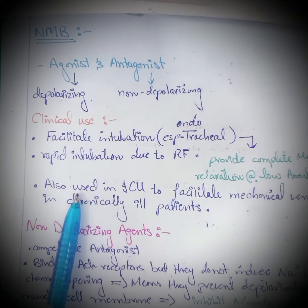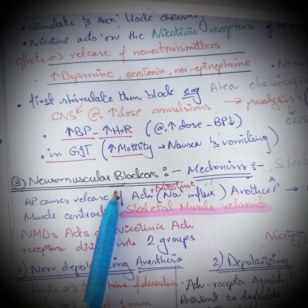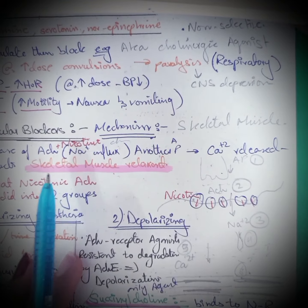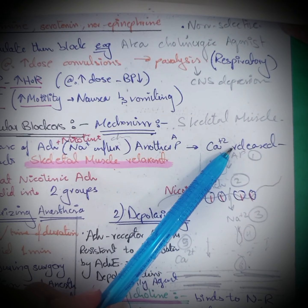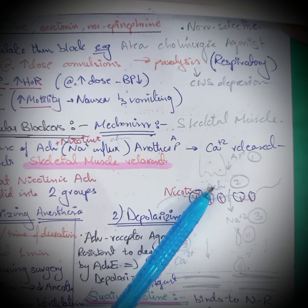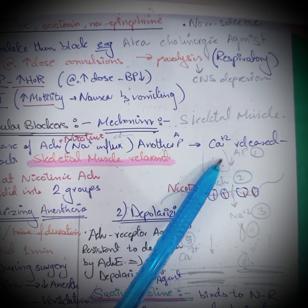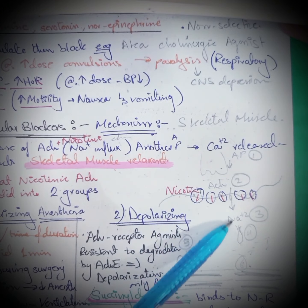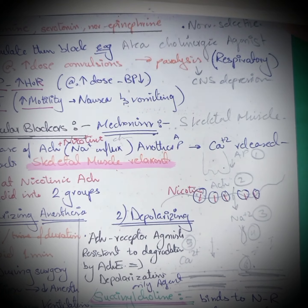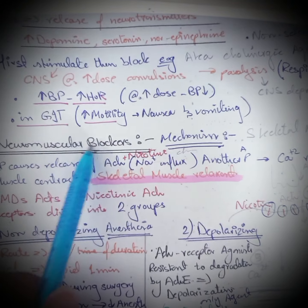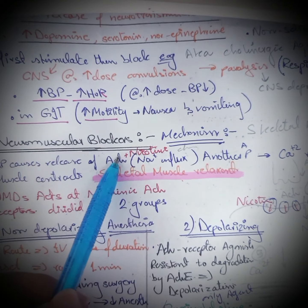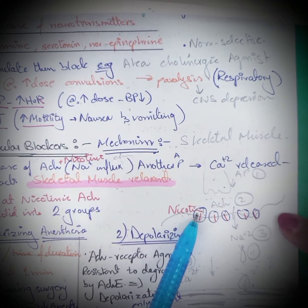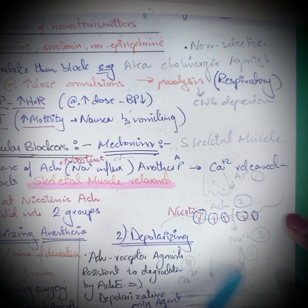Neuromuscular blockers are of two types: non-depolarizing agents and depolarizing agents. To understand them, we need to review the process of muscular contraction. At the neuromuscular junction, the presynaptic membrane, synaptic cleft, and postsynaptic membrane interact: an action potential causes release of acetylcholine, which leads to opening of sodium channels, calcium release, and ultimately muscle contraction. Neuromuscular blocking agents act on the nicotinic acetylcholine receptors here.